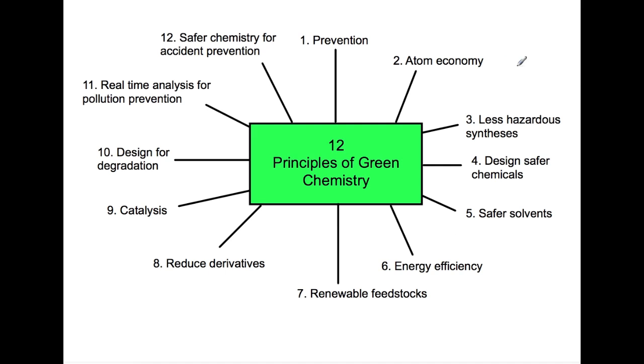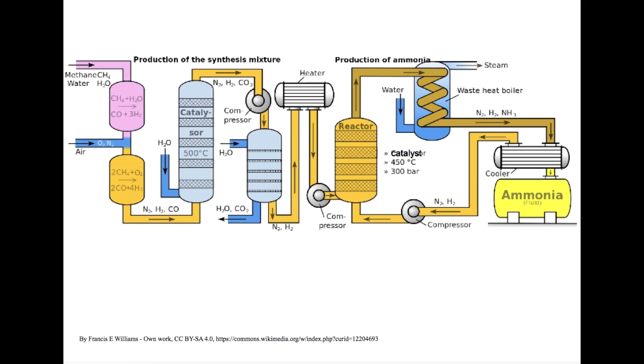Taken altogether, it's hoped that the principles of green chemistry will make chemistry safer. When looking at industrial processes, we often look at flow diagrams. This flow diagram shows the production of ammonia. So we'll have a look at this in terms of green chemistry.